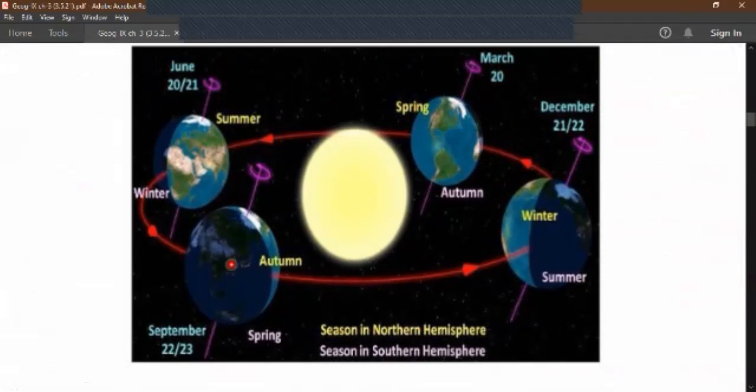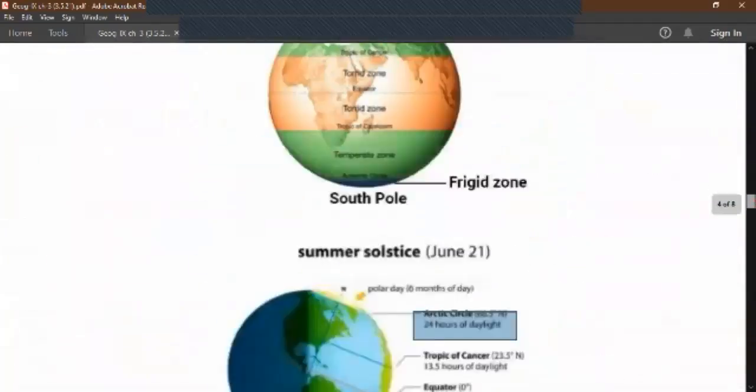So this is overall the movement of the earth around the sun, the variation of the earth and the variation in various seasons. Now children, let us recapitulate the topic by means of a quick test.